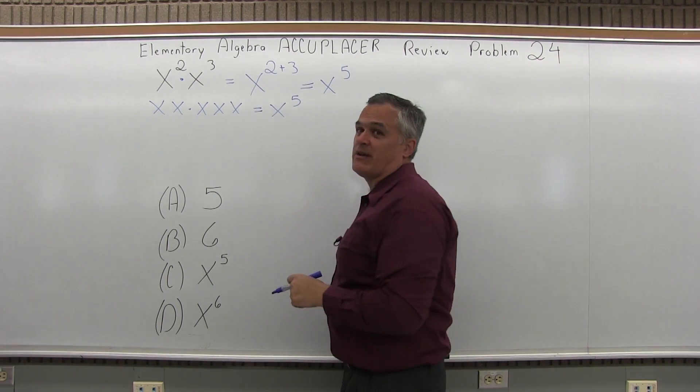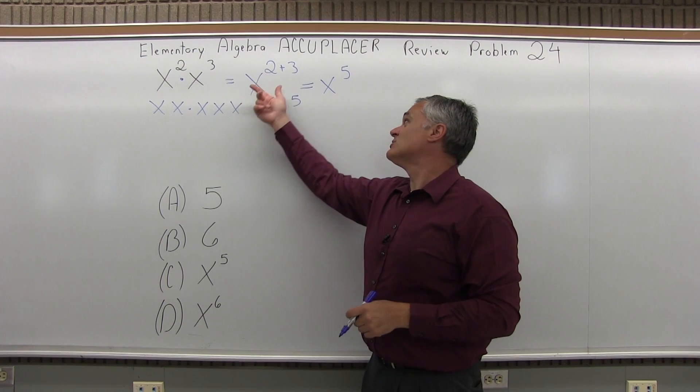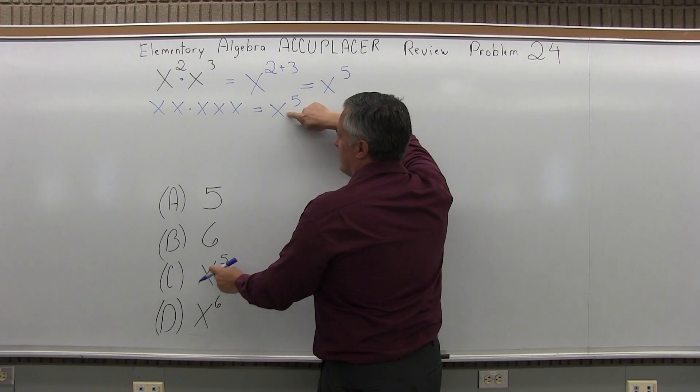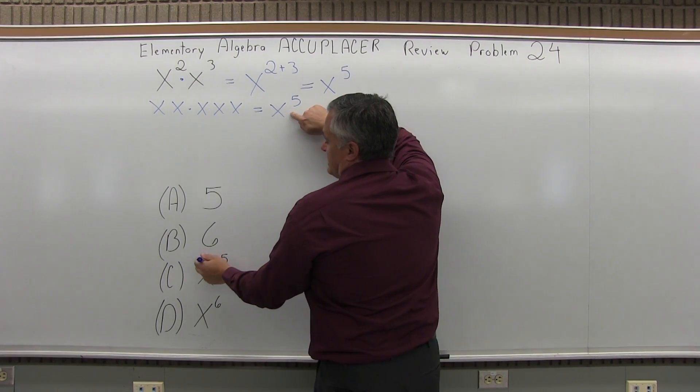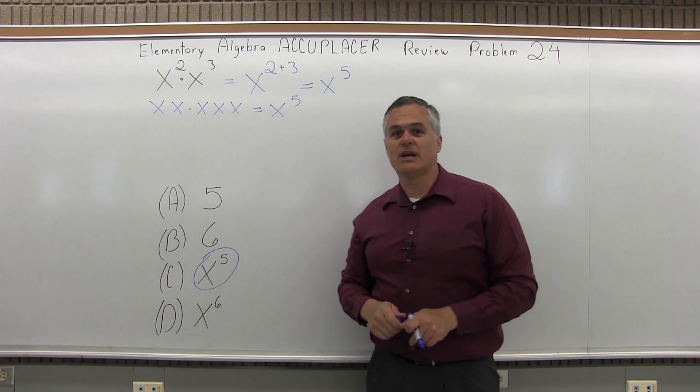So if you remember the rule, you don't have to really know why, but if you don't remember the rule, it makes sense that that should be the rule that you add the exponents. And if you look at the answer of x to the fifth, it is a match with option C. So the answer to problem twenty-four is option C, x to the fifth.